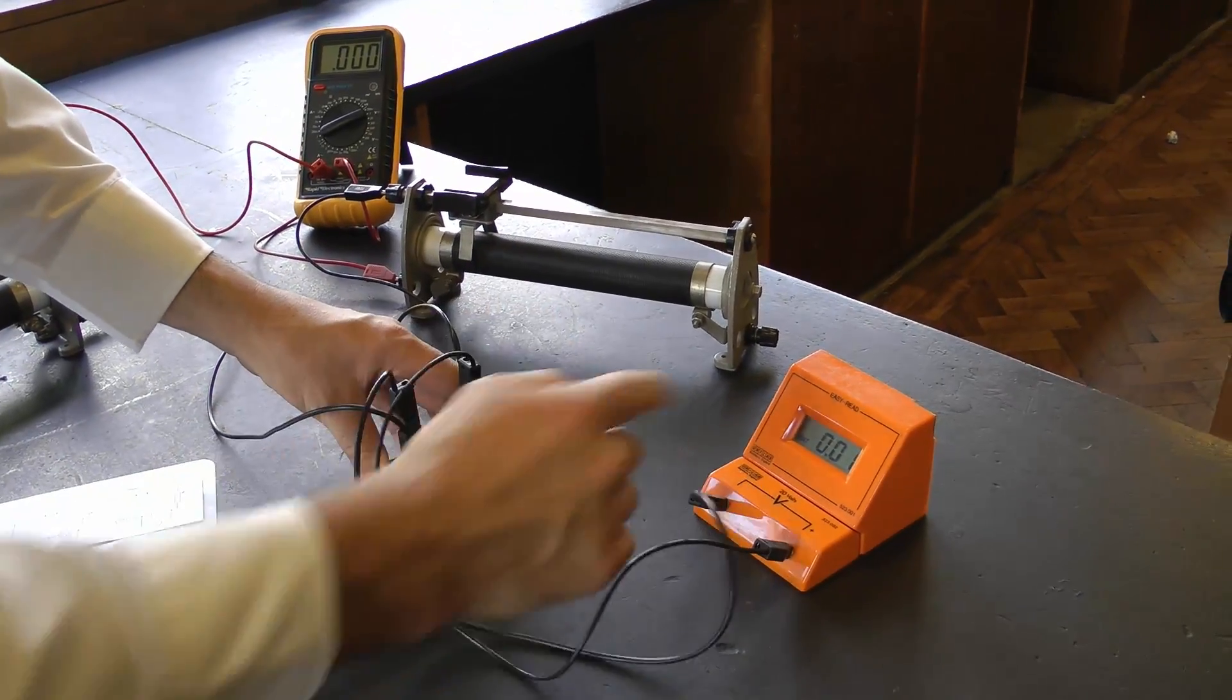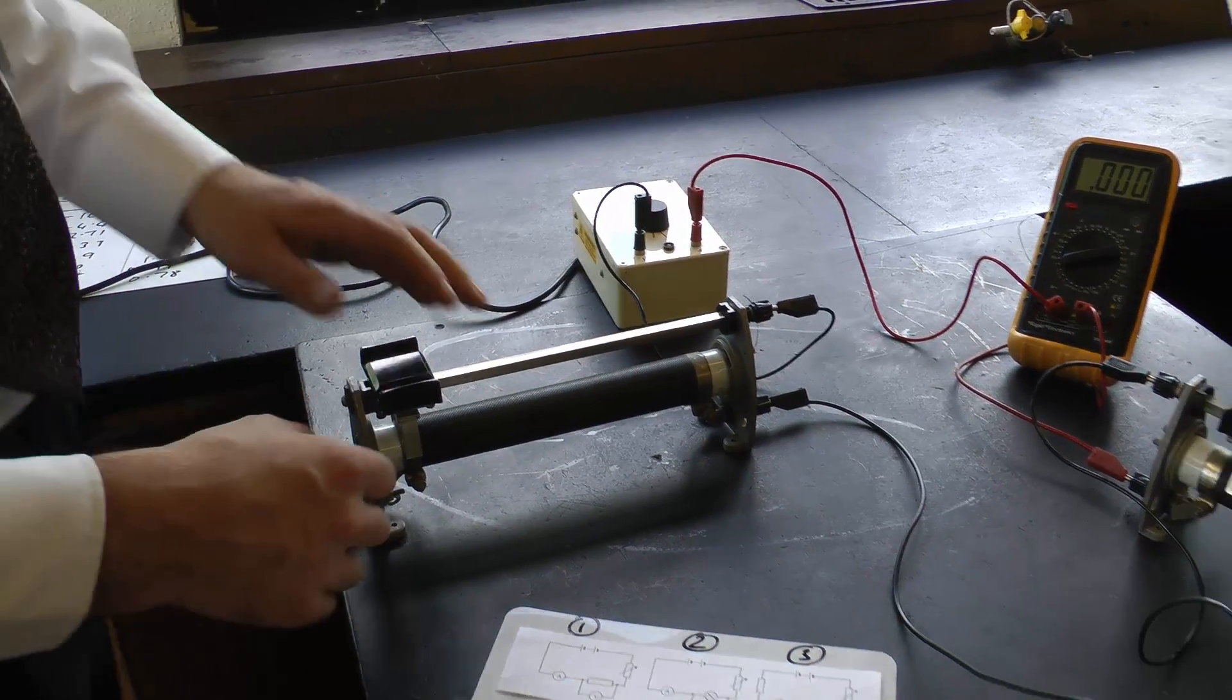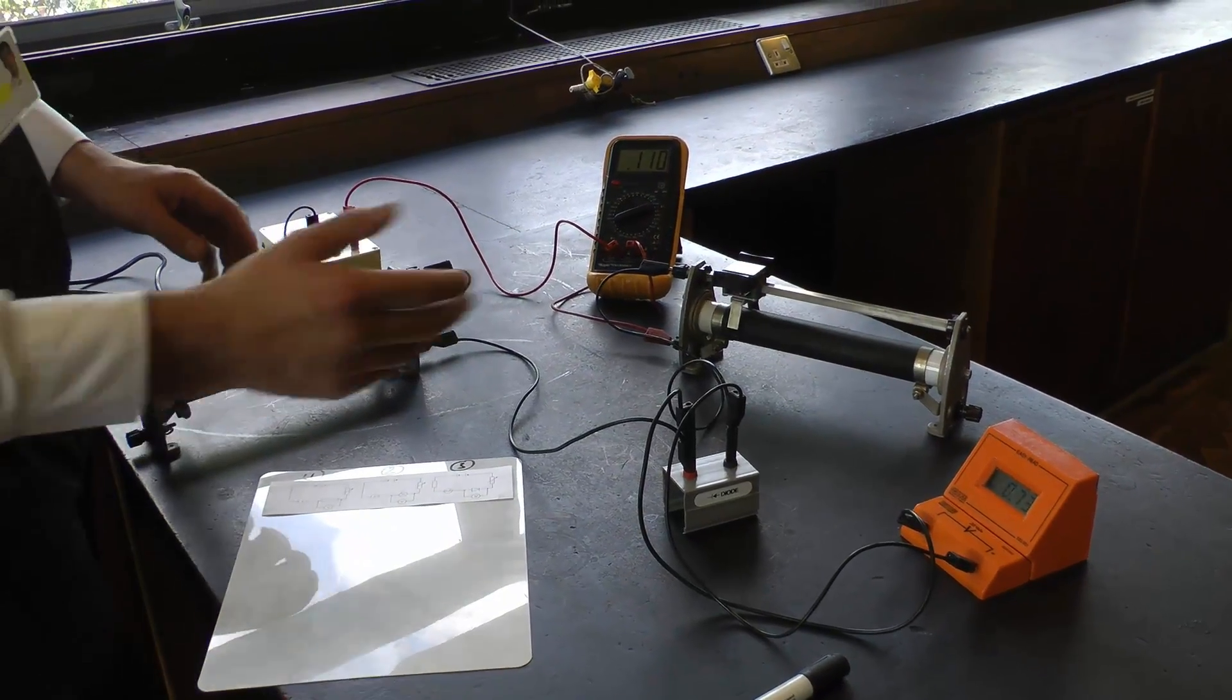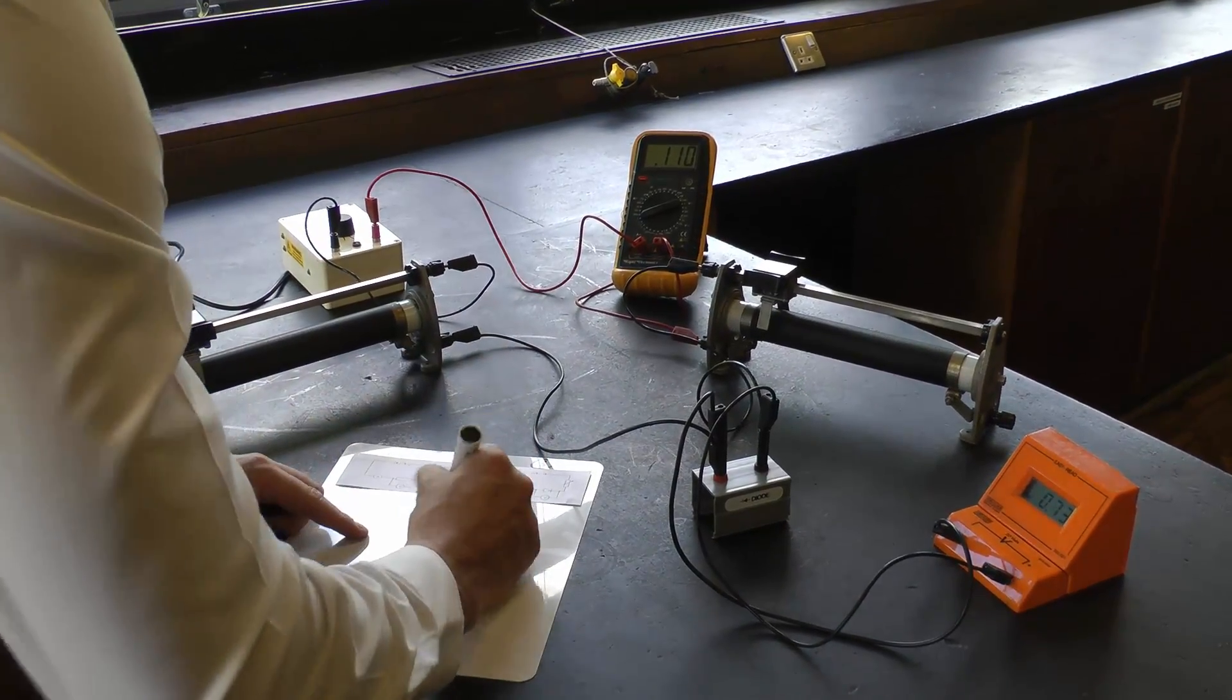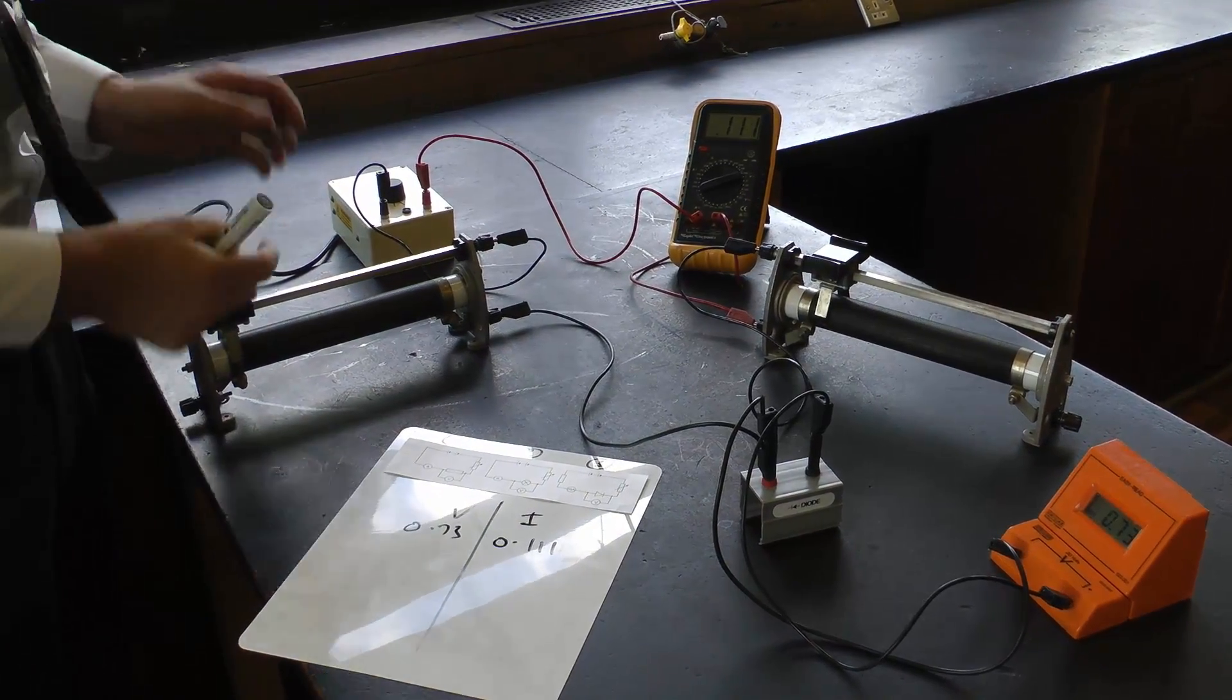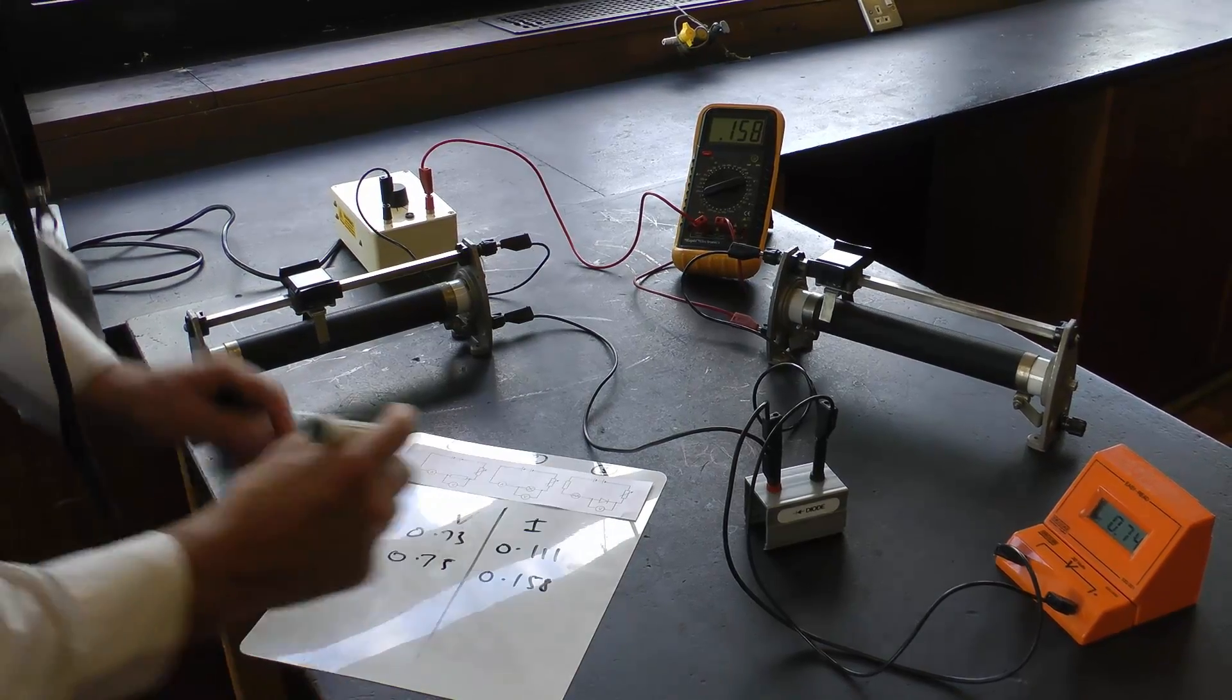Into the diode, and this time we're using the diode in forward bias. A voltmeter is in parallel across the diode, and then we go into another variable resistor here so we can vary the amount of current flowing in the circuit. Switching on, at the moment I've got a reading of 0.73 volts across the diode with a current of 0.111 amps. So 0.75 volts across the diode gives me a current of 0.158 amps.